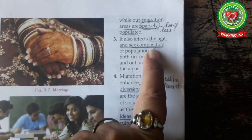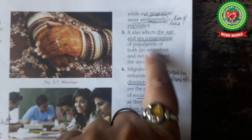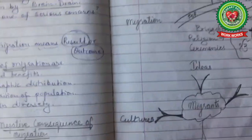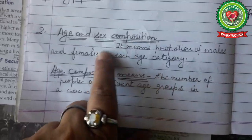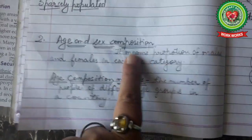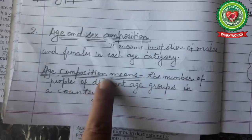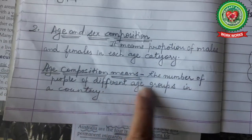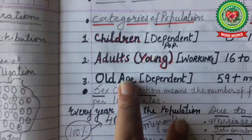Migration also affects the age and sex composition. Age and sex composition means the proportion of males and females in each age category. Age composition alone means the number of people of different age groups in a country.